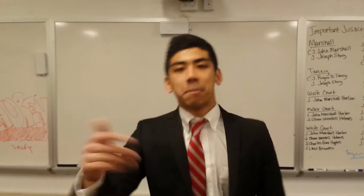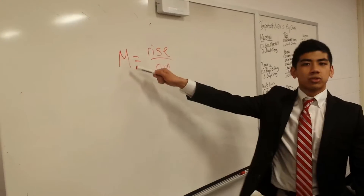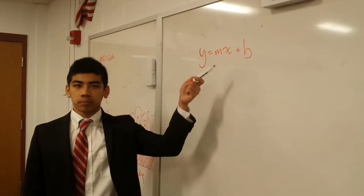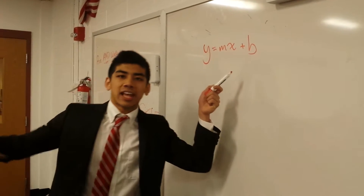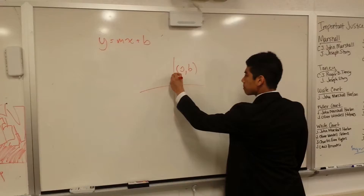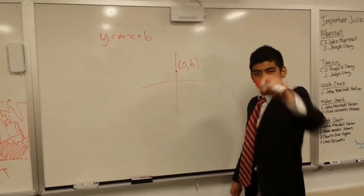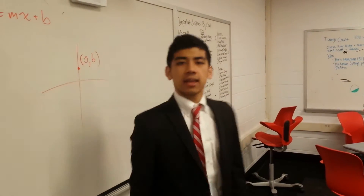Slope-intercept form is what the name implies. M is your slope, run under your rise. B is the y-intercept, use that inner intellect, put that point on the axis, earn yourself some self-respect. Sing it with me,